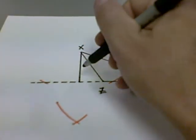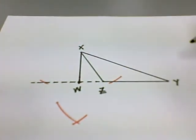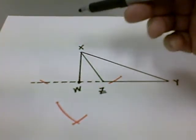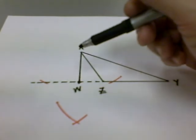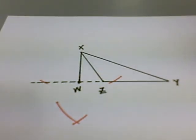And we can name that point W if you wish. But just to show that in this case, the altitude lies outside of the triangle, but it's still perpendicular to the line containing the side YZ. That concludes this video.